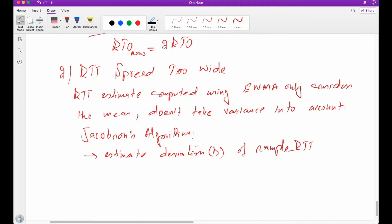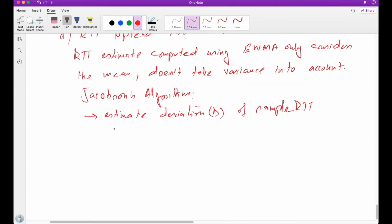And this can be calculated. The deviation is represented by this: D_nu is equal to beta into D_old plus 1 minus beta into sample RTT minus estimated RTT.